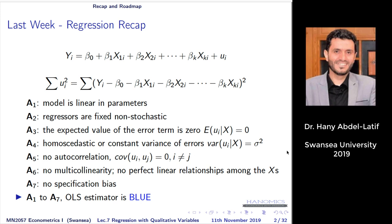Homoscedastic errors means errors have constant variance, which we call sigma squared — we'll cover that next lecture. No autocorrelation means no correlation between errors at different observations, covered the lecture after. No multicollinearity means no linear relationship between your X's. And no specification bias — one case discussed last week was functional form. Specification bias covers other issues we'll address in two weeks.